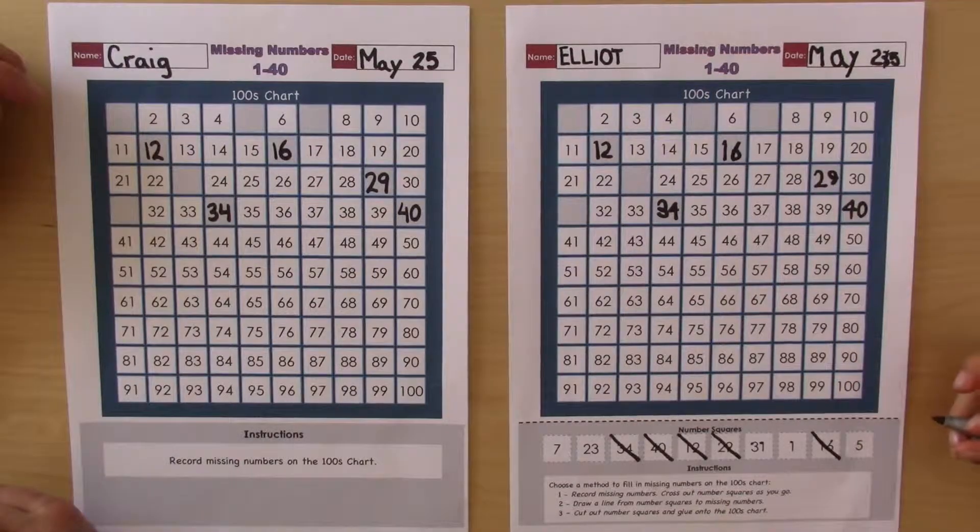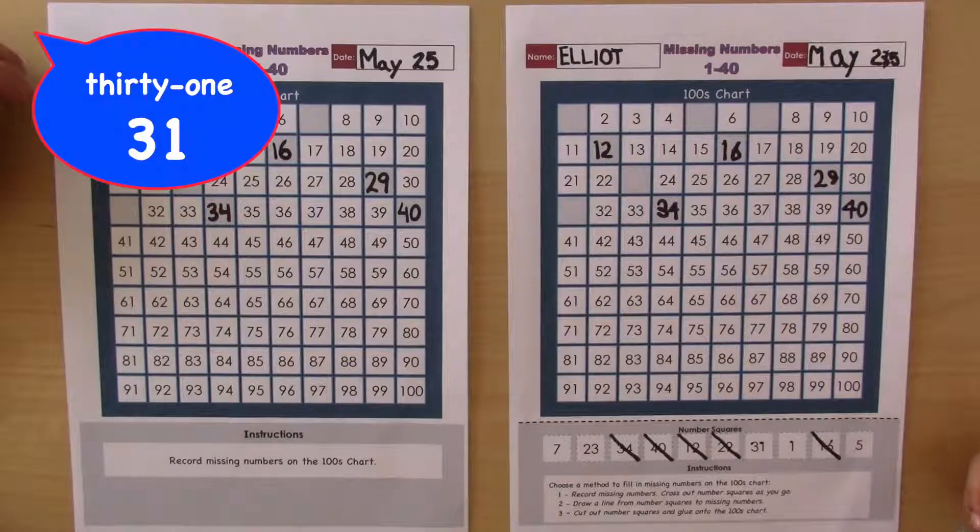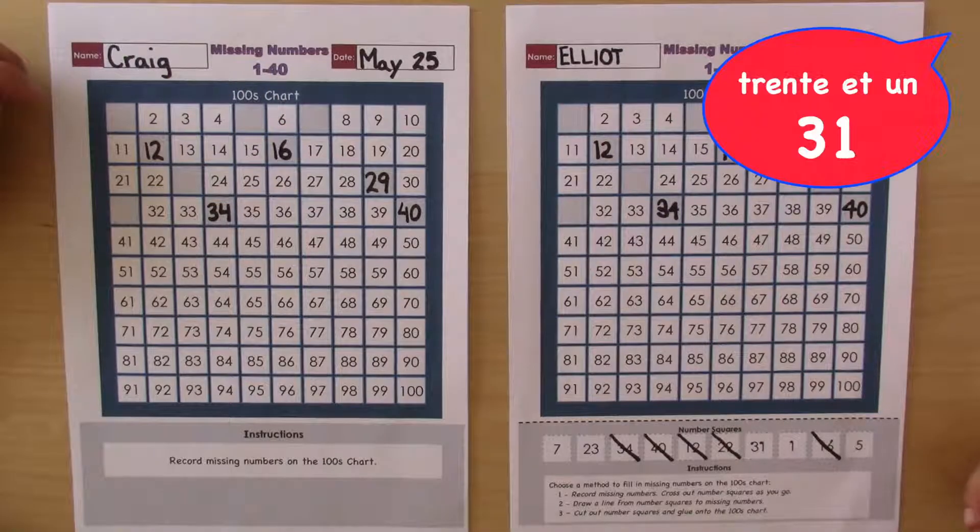Five down, five more to go. What's next? Thirty-one. And how do we say thirty-one in French? Trente.